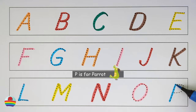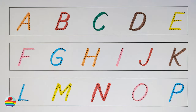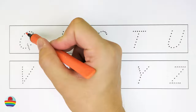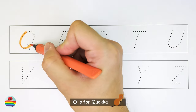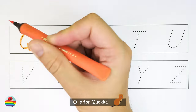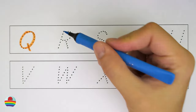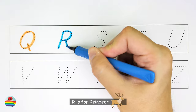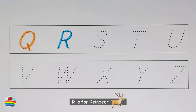P is for parrot. Q is for quokka. R is for reindeer.